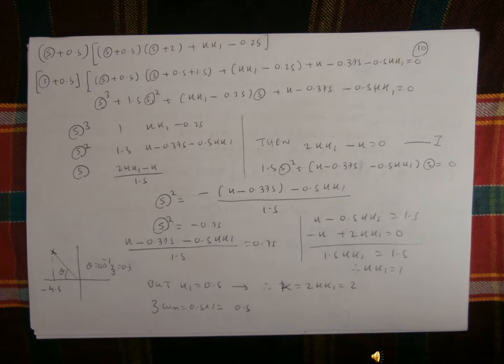So that will be the x² coefficient. Then also the x coefficient will be 2·kk1 minus k, divided by 1.5. So therefore we write down the equation: 2·kk1 minus k divided by 1.5 will be set to 0. So that will be 1.5x² plus (k minus 0.375 minus 0.5·kk1)x equal to 0. Therefore the x² coefficient can be calculated, that will be minus(k minus 0.375 minus 0.5·kk1) divided by 1.5.